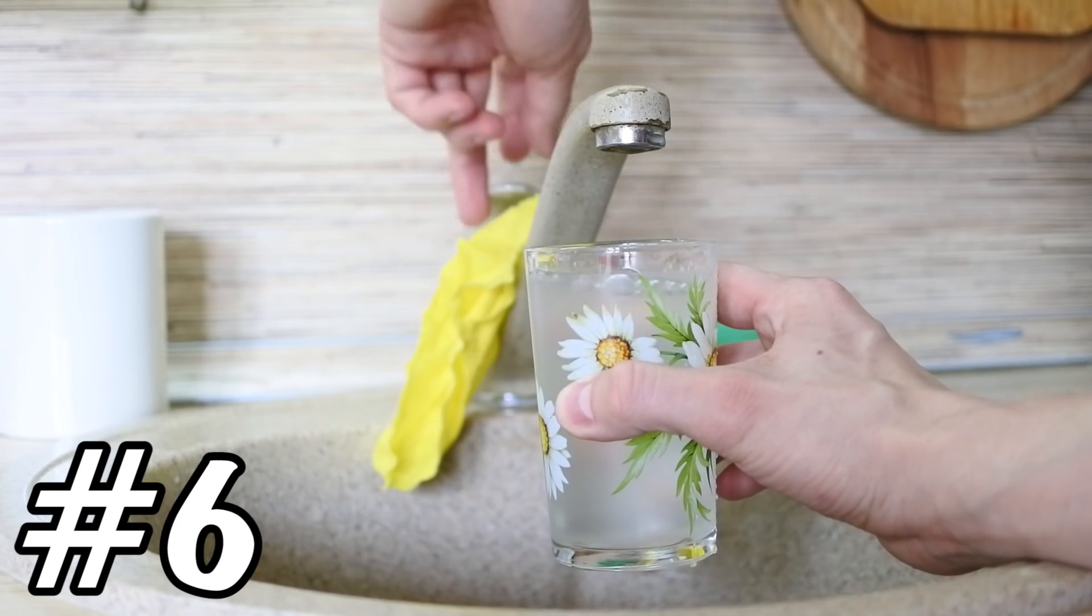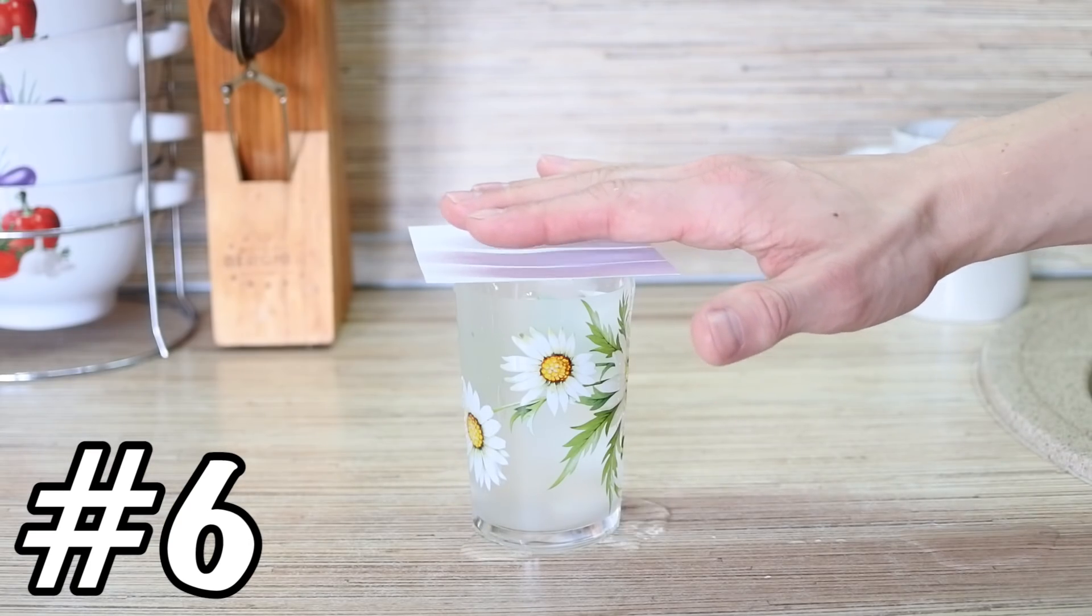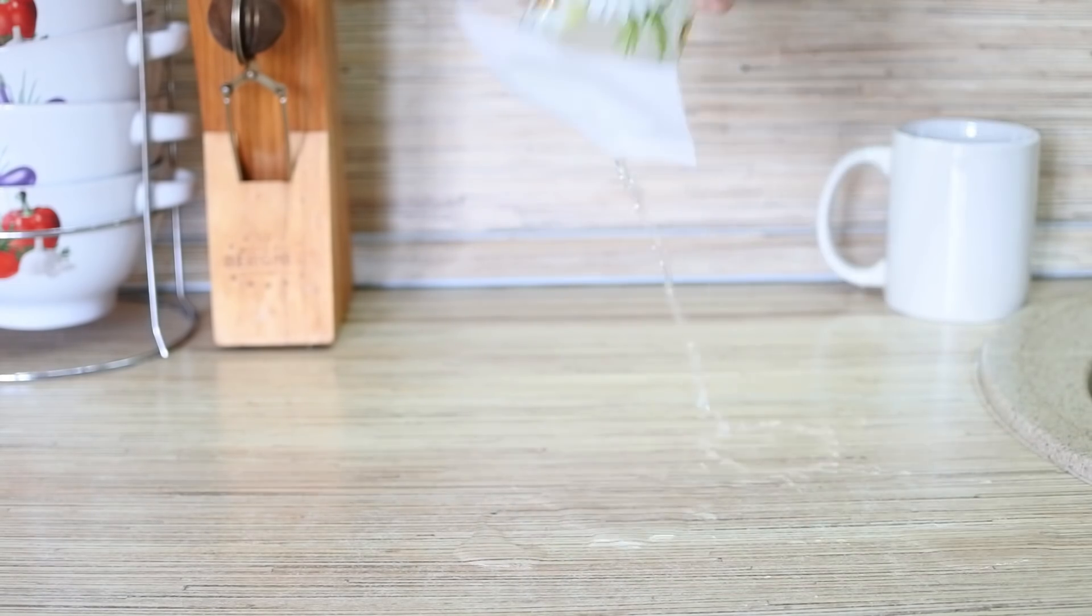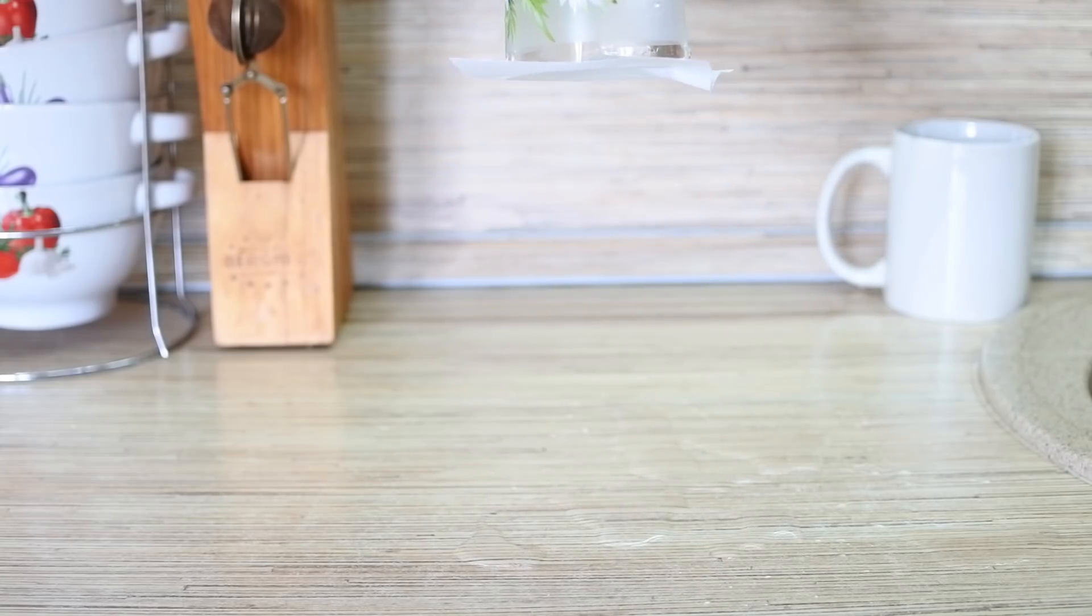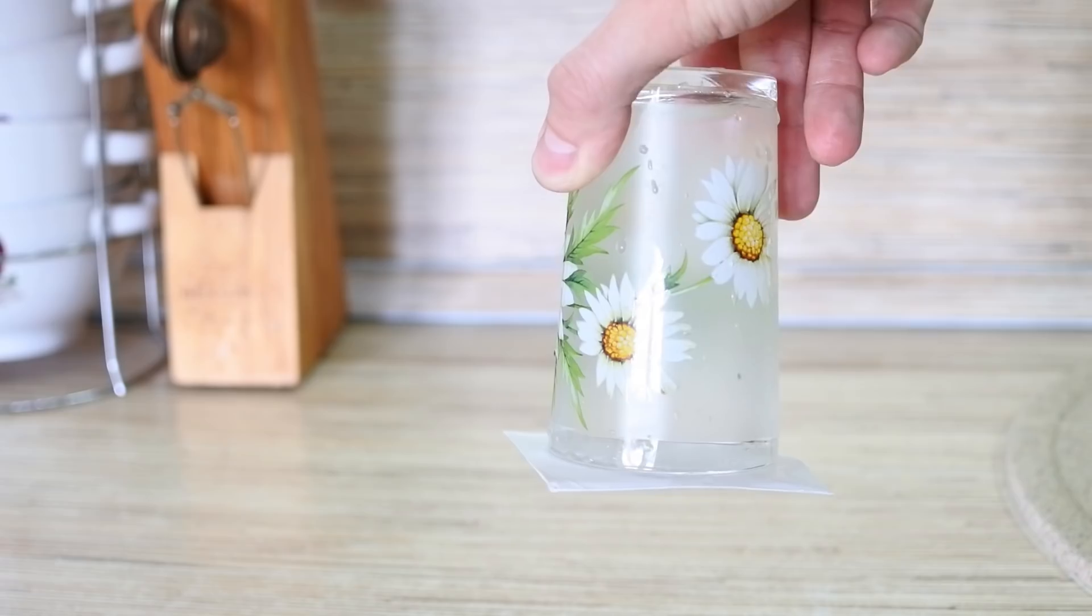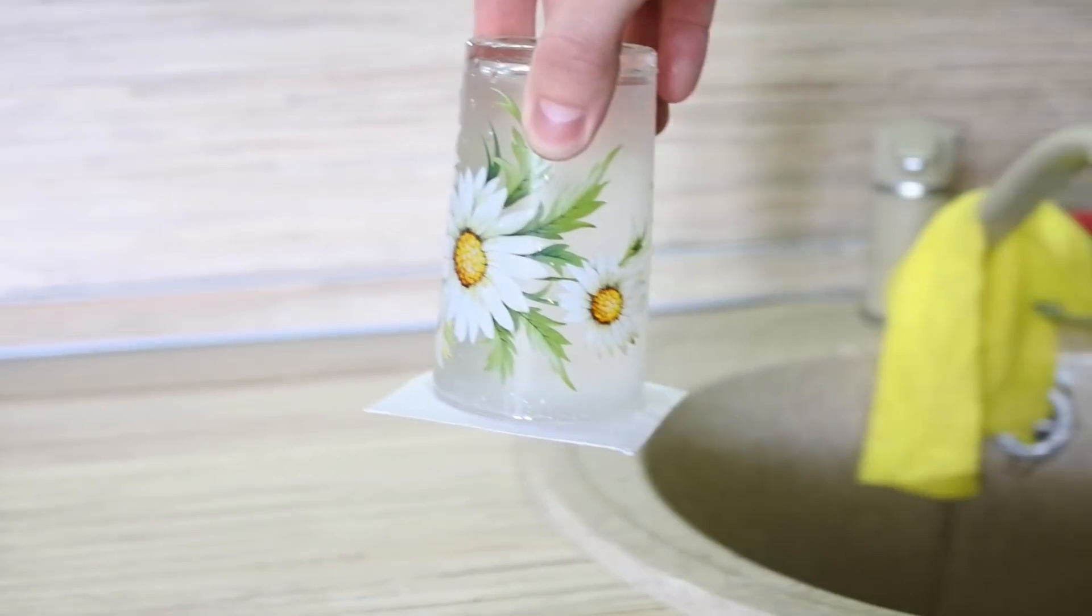Fill a glass with water and place sheet of paper on it, then shortly flip the glass upside down. The water will not leak out, because the atmospheric pressure will press the paper. Practice a little before demonstration and use thick paper or plastic card instead of thin paper.